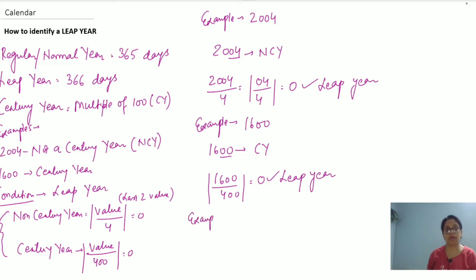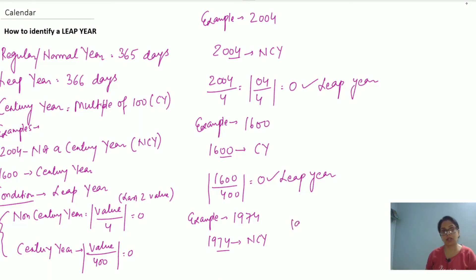Let's take a last example: 1974. We check the last two digits — 74 is not a multiple of 100, so it is not a century year. Since it's a non-century year, we check divisibility by 4 using the last two digits: 74 divided by 4 gives a remainder of 2. Since the remainder is not 0, 1974 is not a leap year.